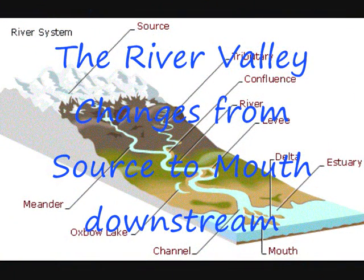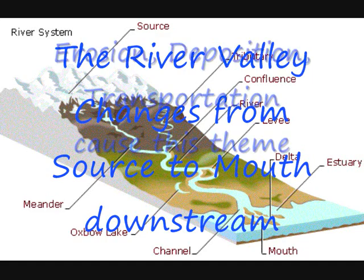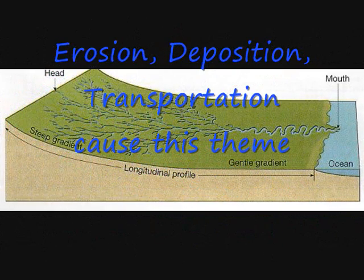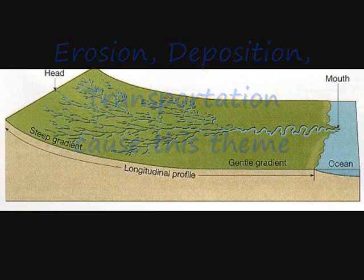The river valley changes from source to mouth and stream. Erosion, deposition, and transportation cause this change.